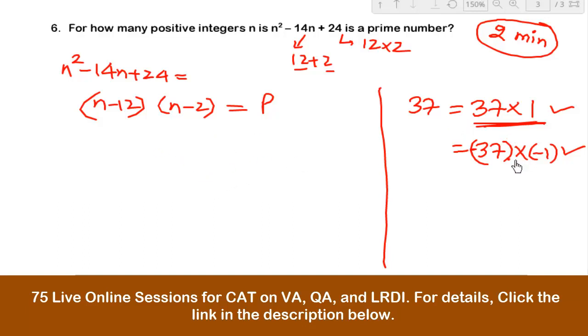So that's the concept I will be using. Here if it is a prime number and it is a product of two numbers, the moment I take any value of n, this will become one number and the other will become the second number. And this is only possible if one among them is 1 and the other is a prime number.